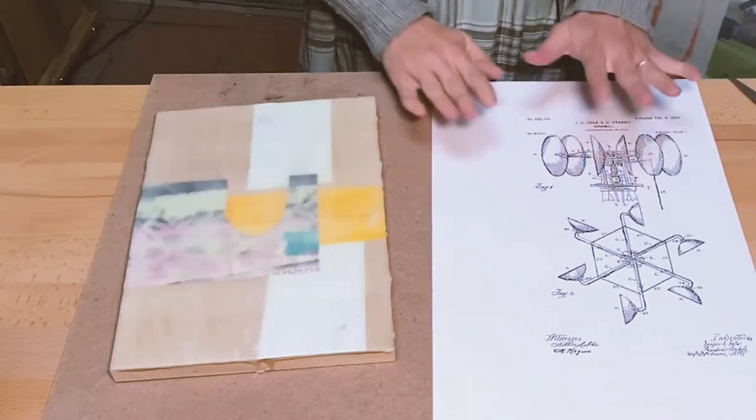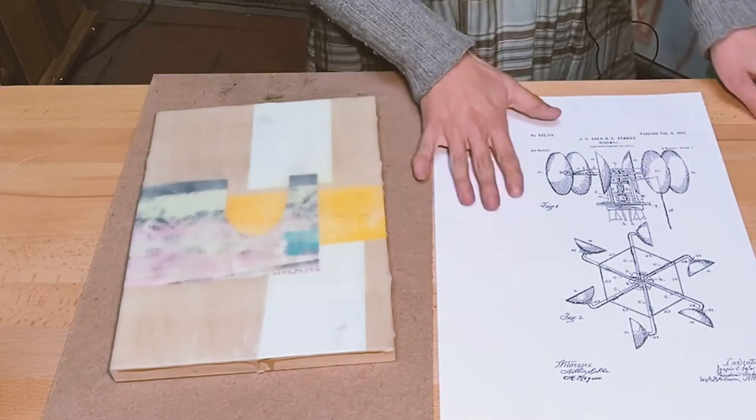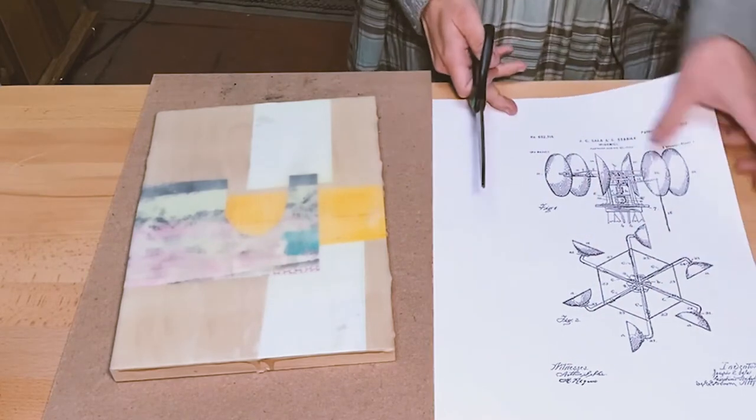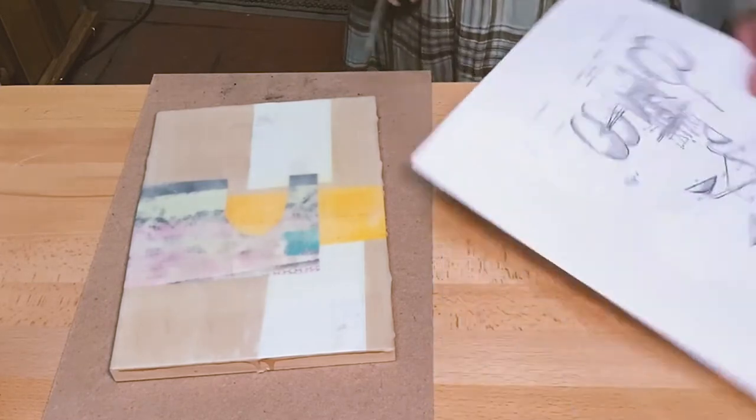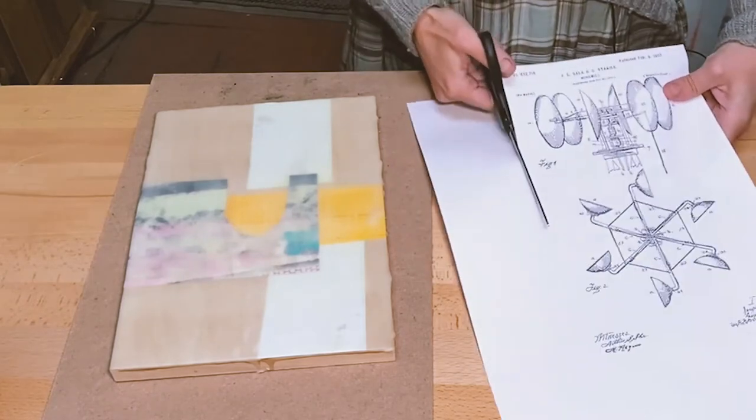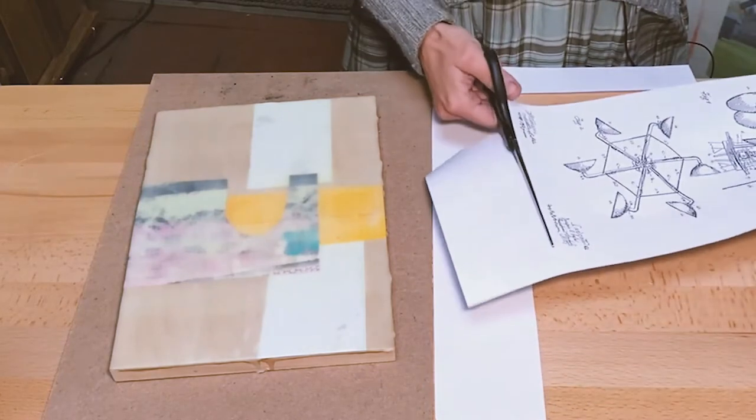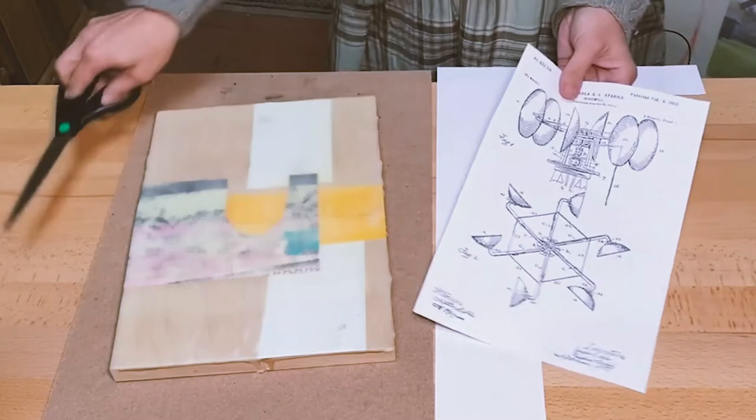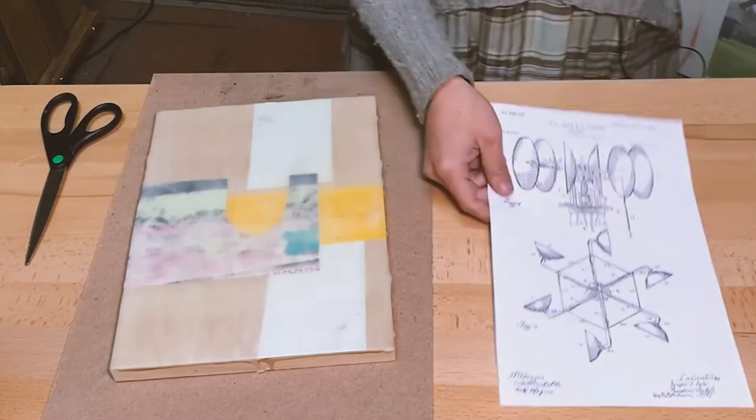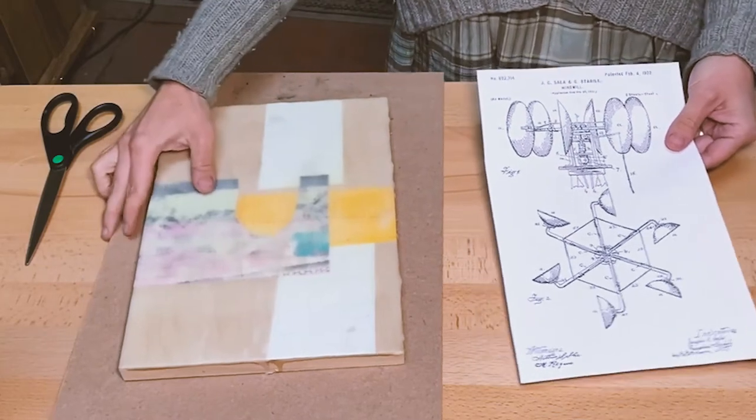So the first thing we want to do once we have our either Xerox copy or laser print is to cut out the parts that we want to use. So I'm going to try to transfer this whole image but I don't need all this extraneous paper, so I'm just going to cut out what I don't need, because the only parts that are going to transfer are the black toner. So this really has to be, everything that's just paper is going to get removed during the process.